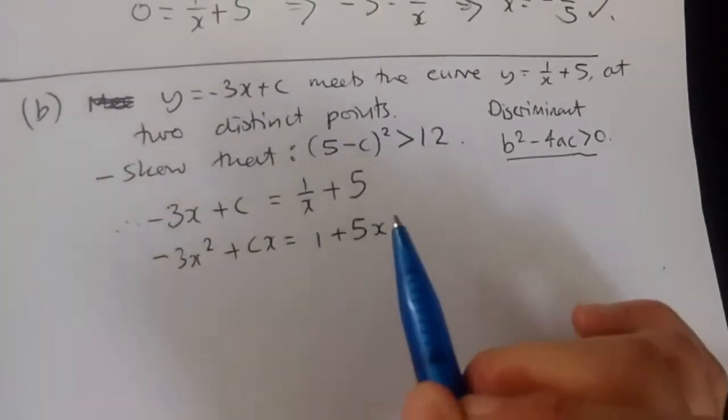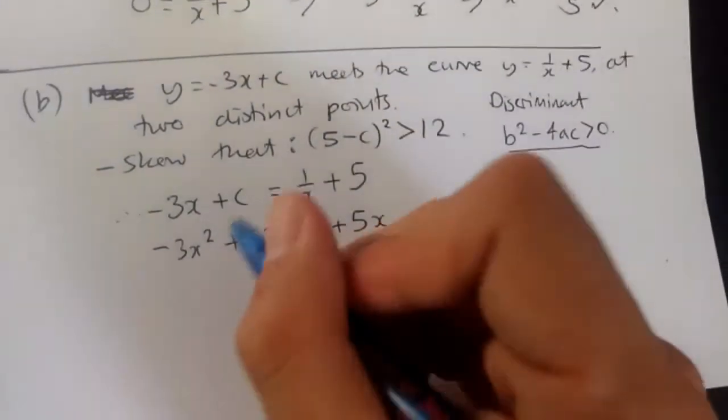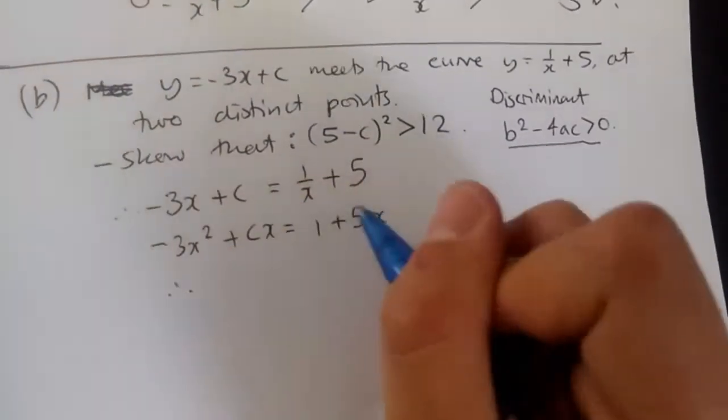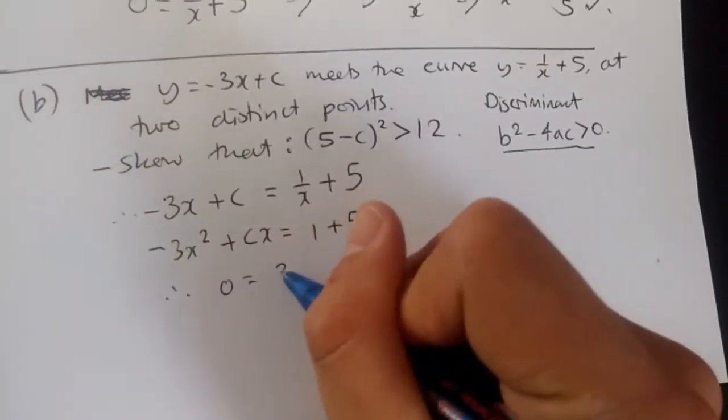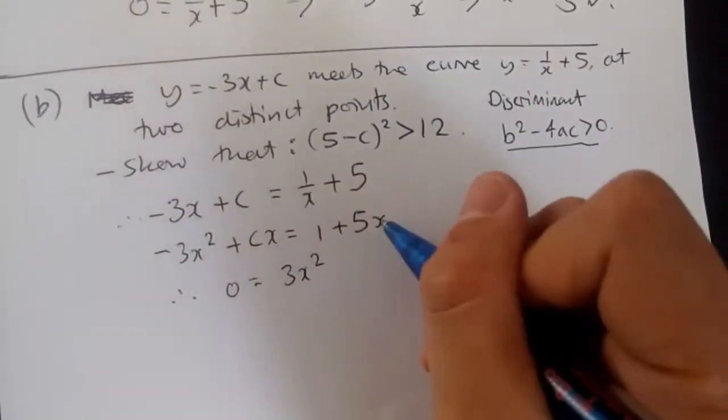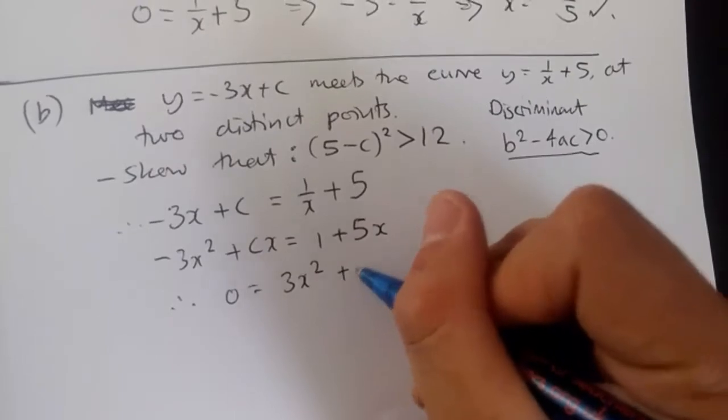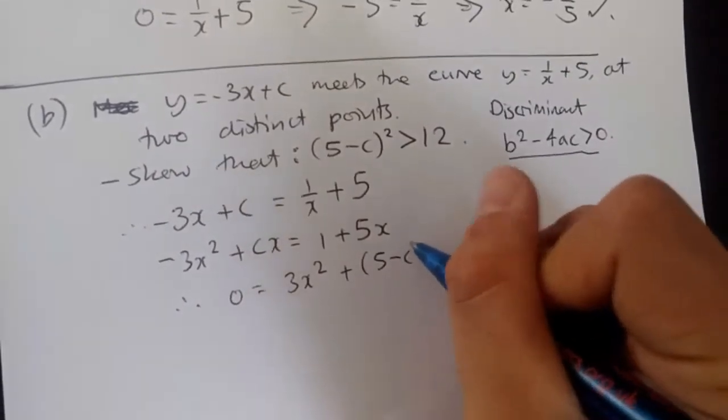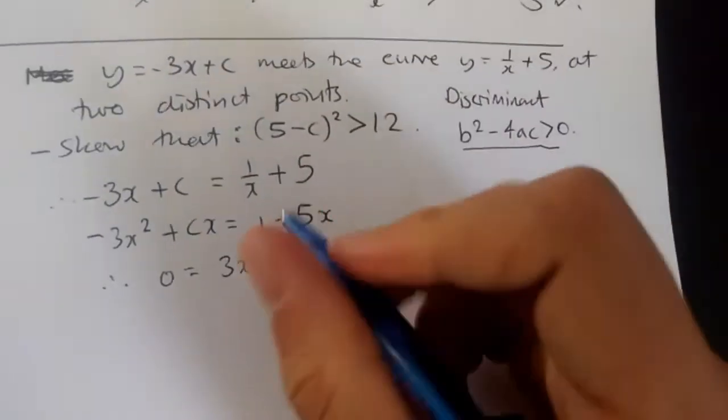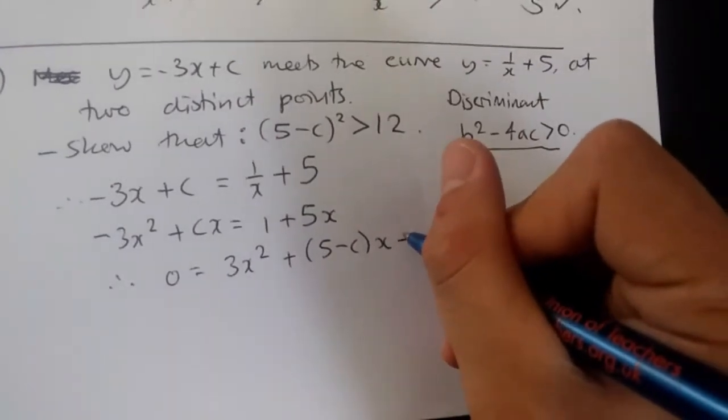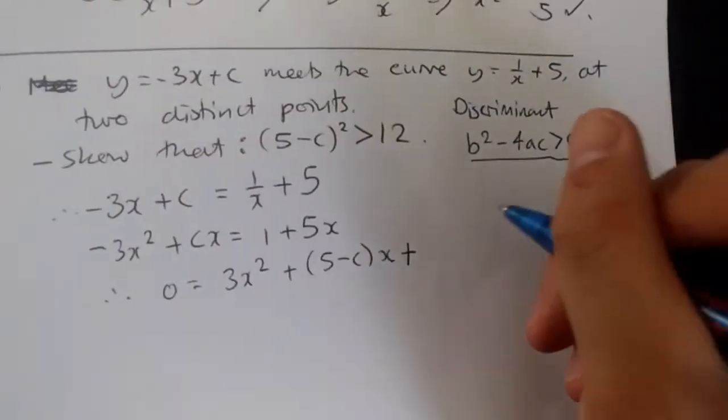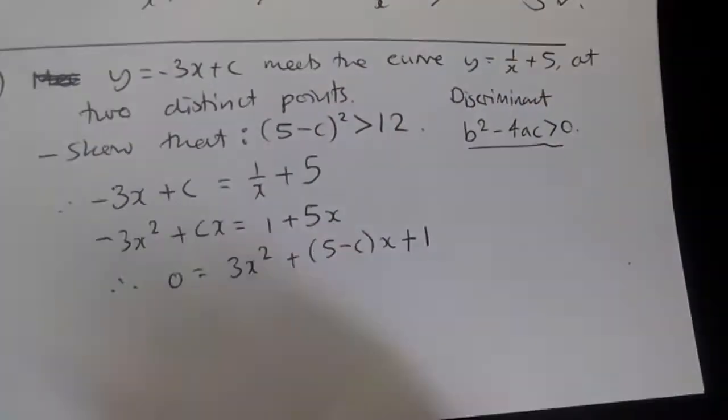Now, I'm moving everything to one side to have a nice quadratic expression. So adding across, we're going to have 0 equals 3x squared, 5x take away cx can be factorized as 5 take away c times x, and then, of course, plus 1. And that's it.